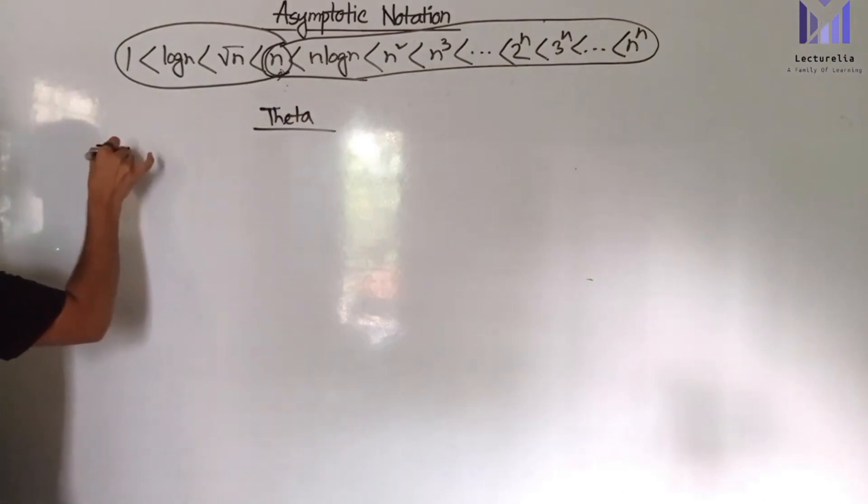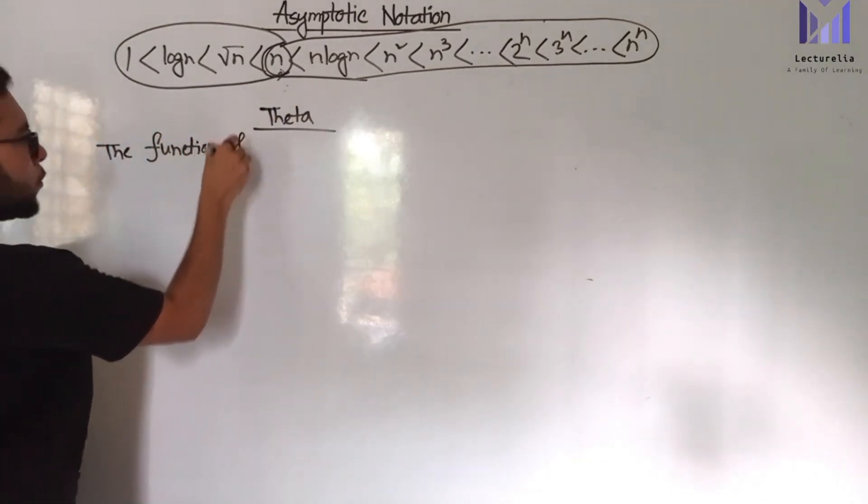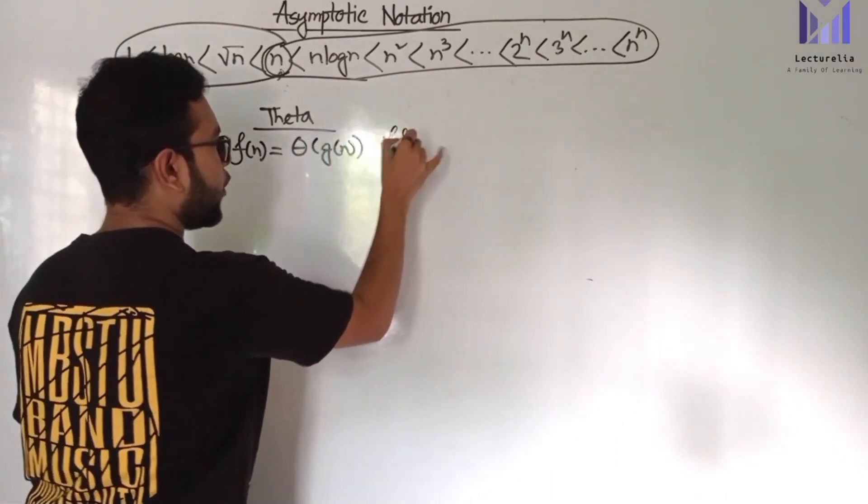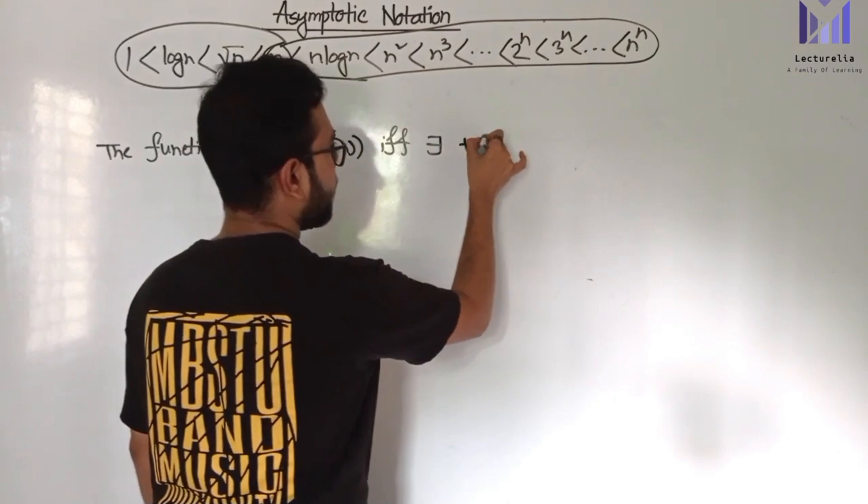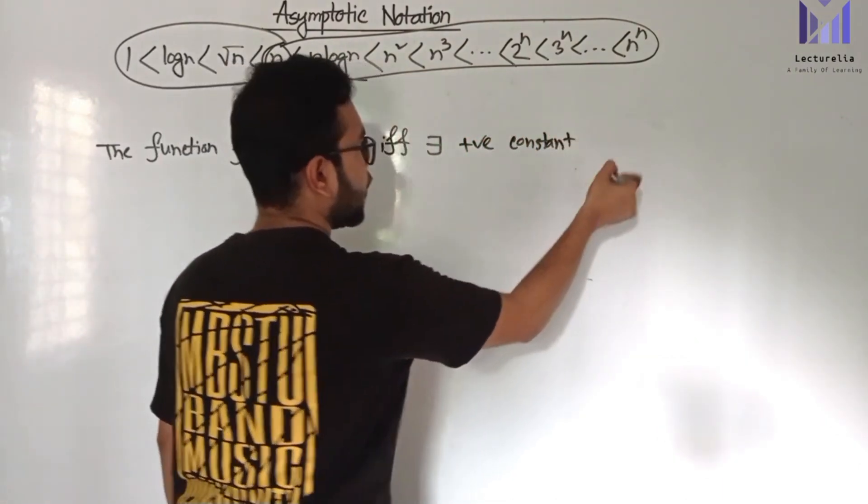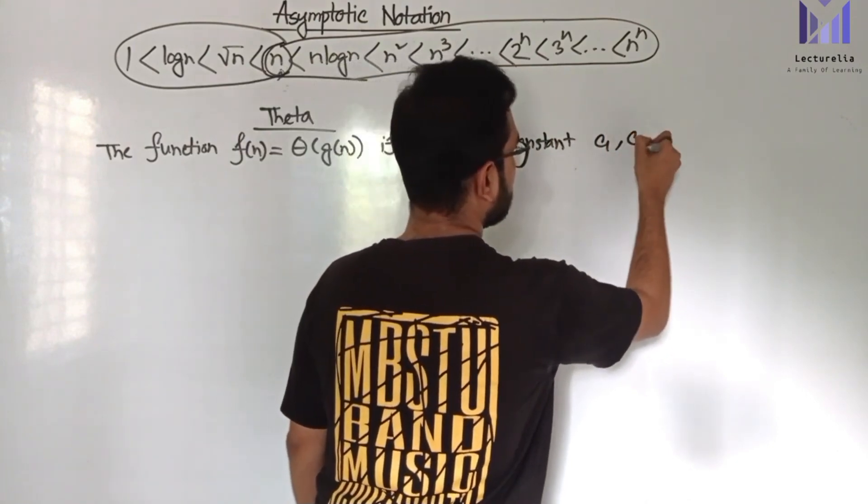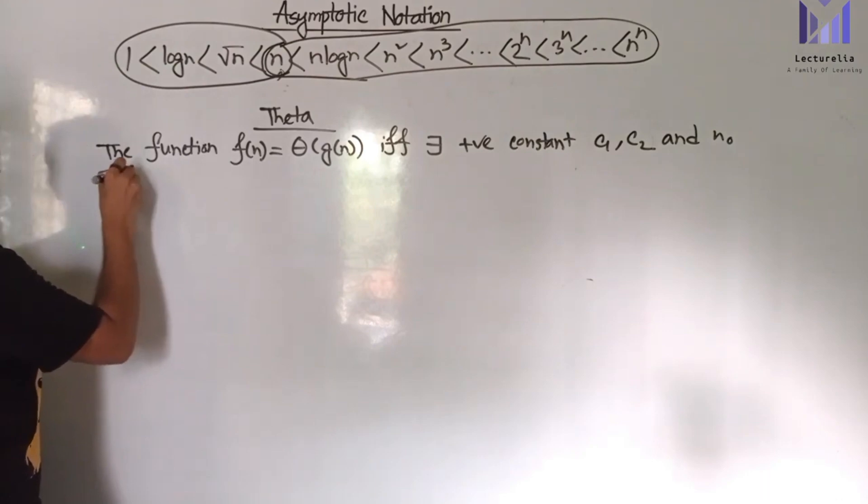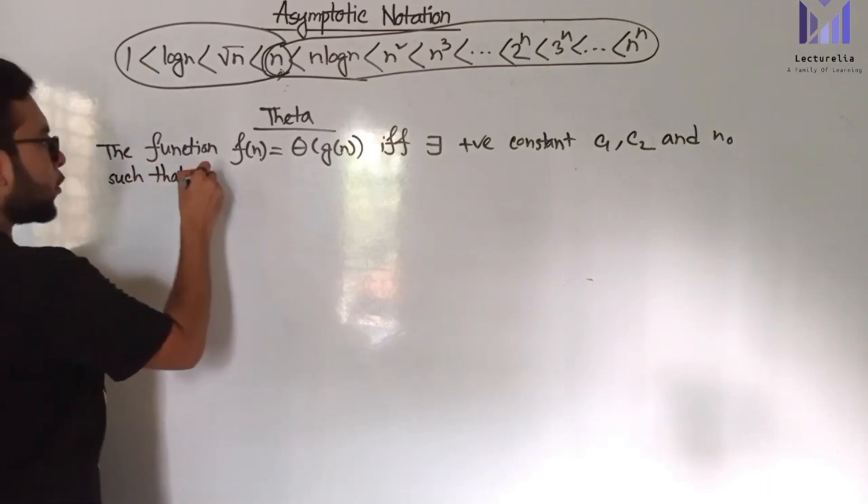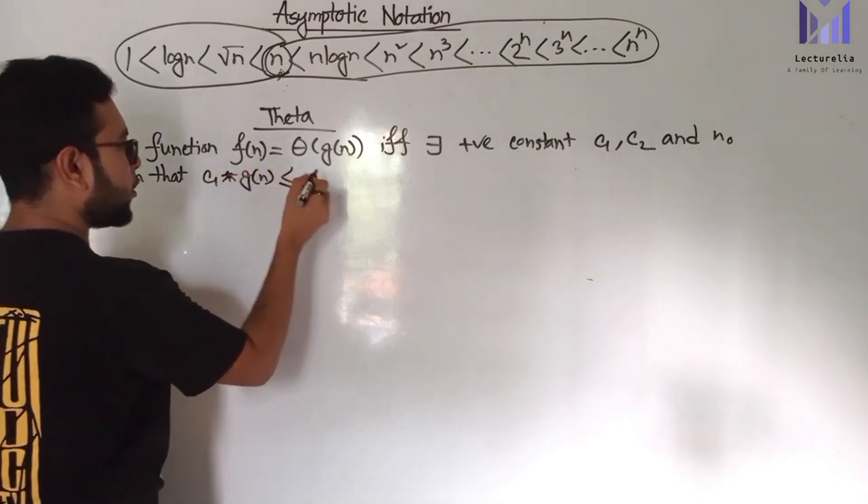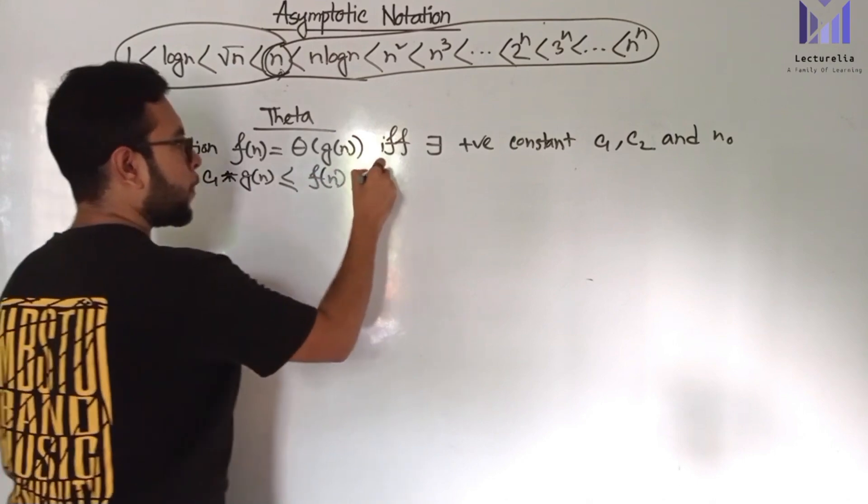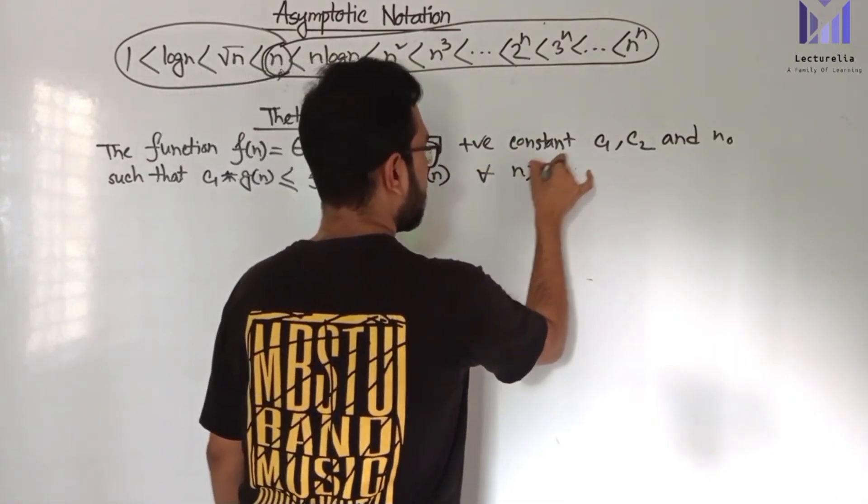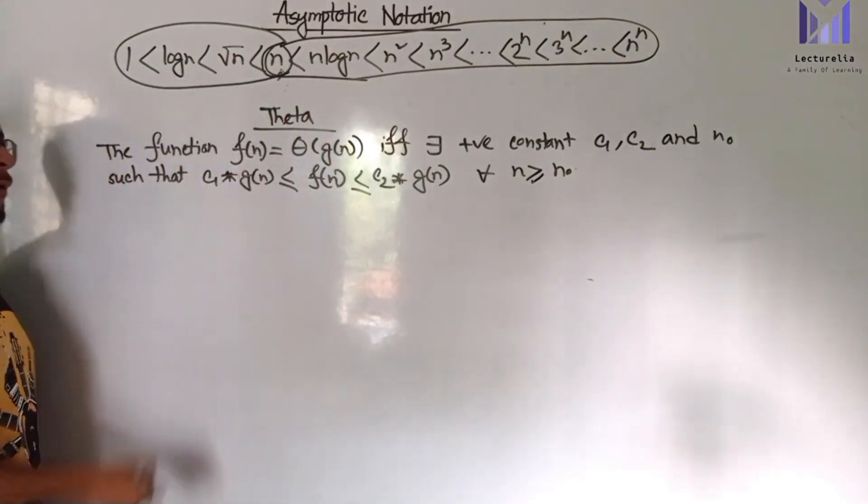Theta: The function f(n) equals Theta of g(n) if and only if there exists some positive constants c₁, c₂, and n₀ such that c₁ into g(n) is less than or equal to f(n) which is less than or equal to c₂ into g(n) for all n greater than or equal to n₀. This is the definition.